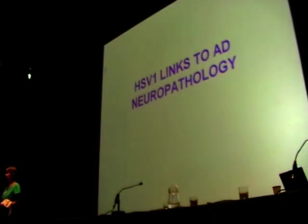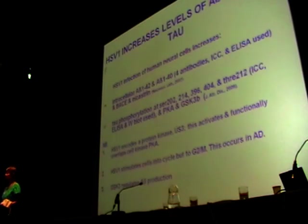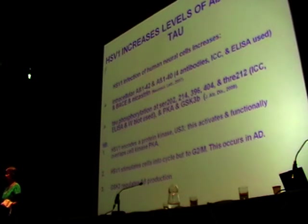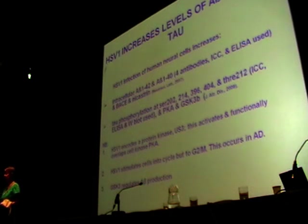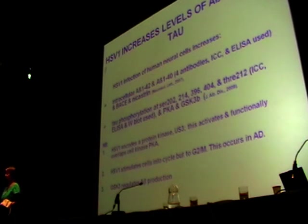I'll go on now to our more recent work with HSV-1 links to Alzheimer's neuropathology. To summarise quite a lot of the work: we found that the virus increases levels of amyloid-beta, using human neural cells. Using four different antibodies to A-beta-1-42 or A-beta-1-40 by immunocytochemistry and ELISA, there was an increase in the level of beta-amyloid, also an increase in the levels of the enzymes responsible for degrading amyloid precursor protein to beta-amyloid — including nicastrin. We found also that tau phosphorylation occurred at various sites, confirmed using immunocytochemistry, ELISA, and Western blotting.